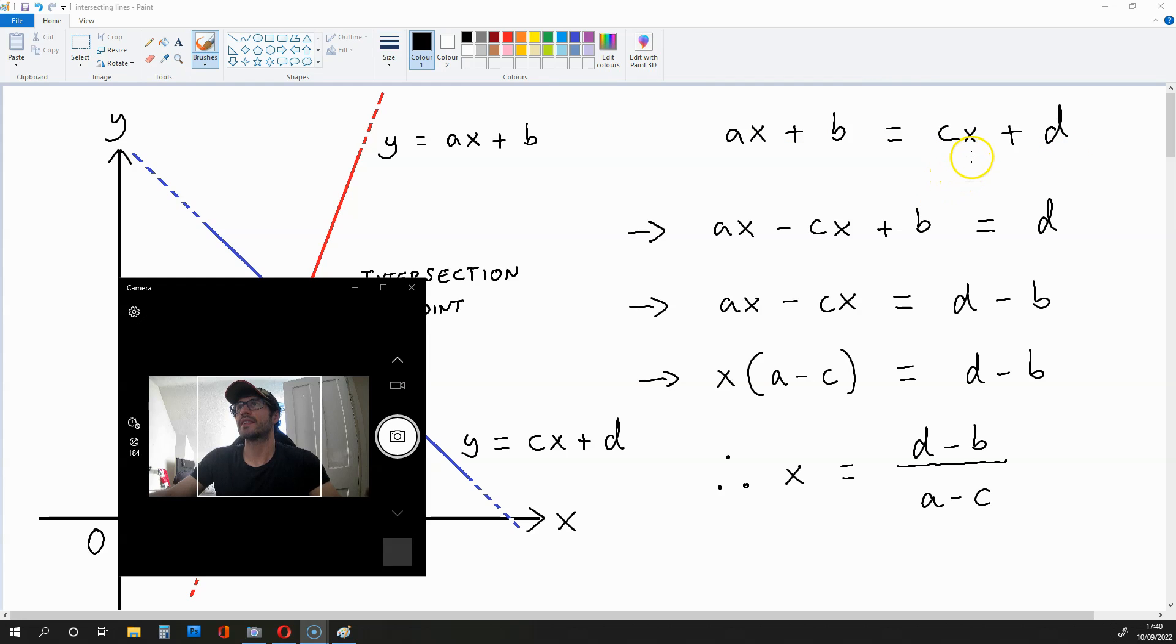So we have AX plus B equals CX plus D. If we subtract CX from both sides of this equation, we get AX minus CX plus B is equal to D. If we subtract B from both sides of this equation, we get AX minus CX is equal to D minus B.